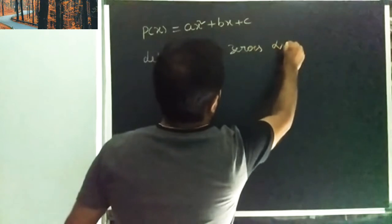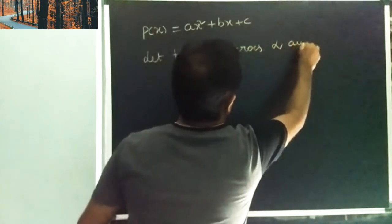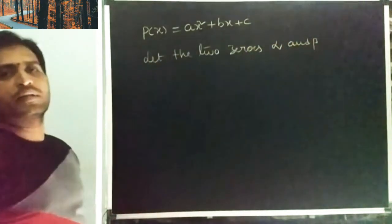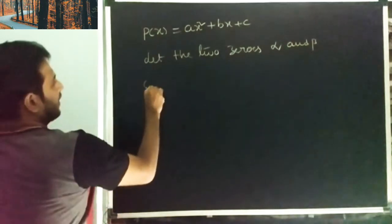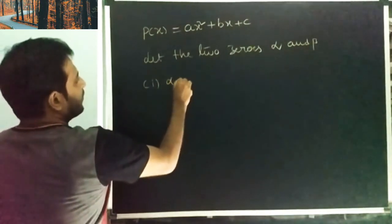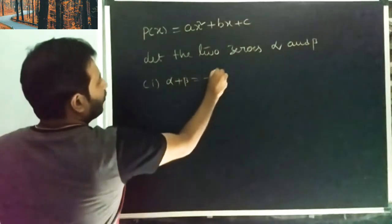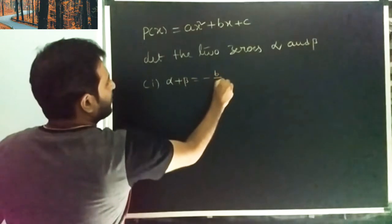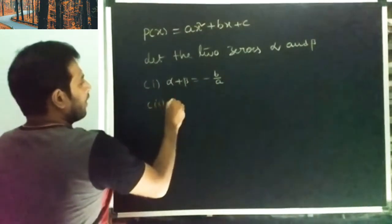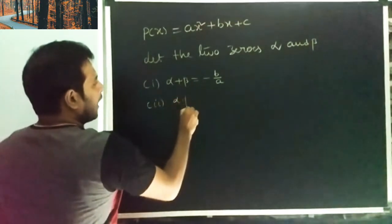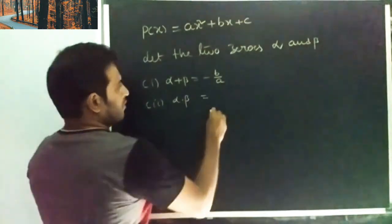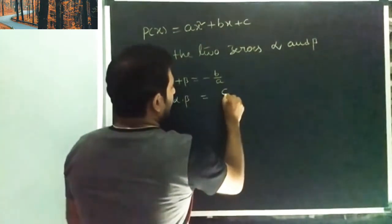Alpha and beta are the zeroes. We know: first one, alpha plus beta is equal to minus b by a. Second one, alpha beta — product of the zeroes — is c by a.